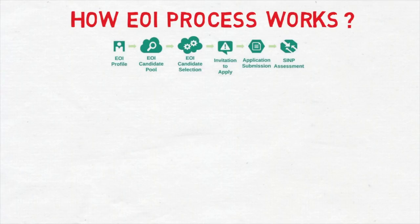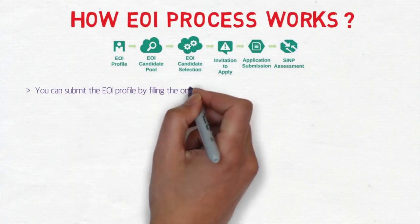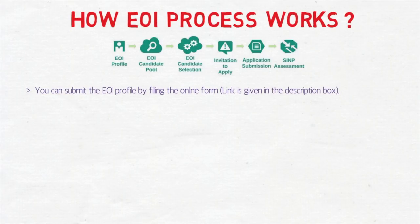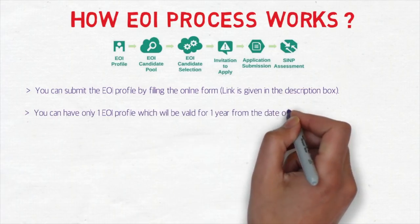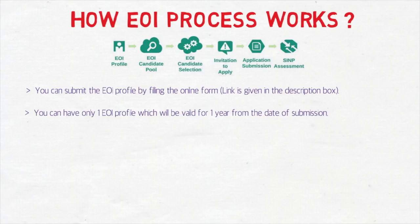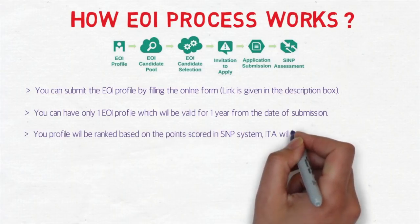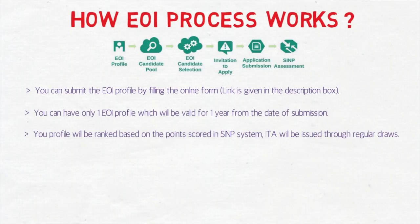Here's how the process actually works. First, you submit your EOI profile, which enters a pool — don't confuse it with the Express Entry pool, this is a separate pool. Then your application gets selected and you receive an ITA. You can submit the EOI profile by filing the online form — the link is in the description. You can have only one EOI profile, which is valid for one year from the date of submission, similar to Express Entry. Your profile is ranked based on points scored in the SINP system, and ITAs are issued through regular draws.